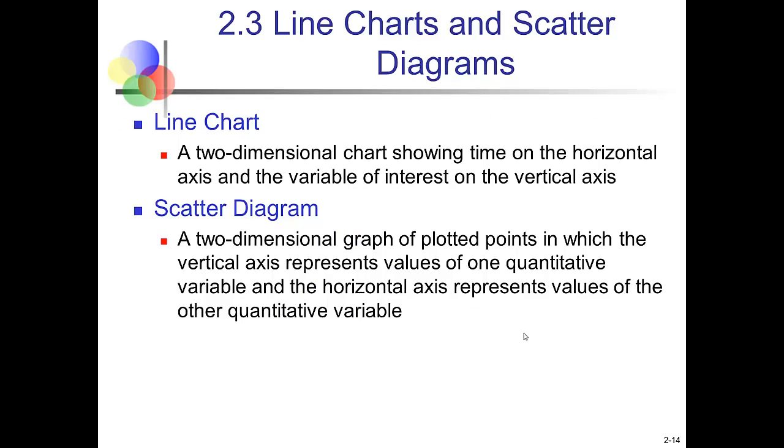Section 3 of this chapter talks about two things that we use to describe quantitative data. Line charts and scatter diagrams. A line chart is a chart where we put time on the horizontal axis and the variable of interest on the vertical axis. And when we use a line chart, we're going to see a time trend, if there is one. A scatter diagram allows us to plot two variables against each other, so that we can see if there's a relationship between the two variables.